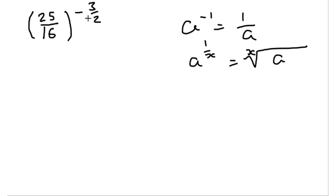Okay, so using that here, minus 3 over 2, well, this is the same as writing this problem as 25 over 16 to the power of minus 1 times by 3 over 2.